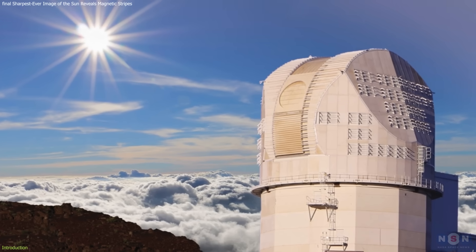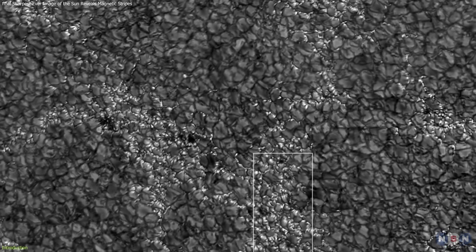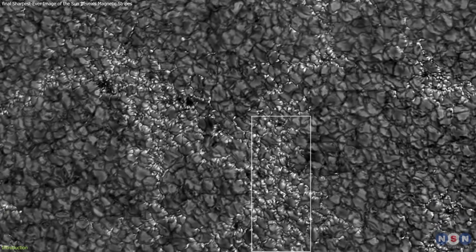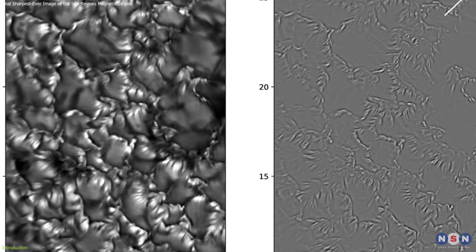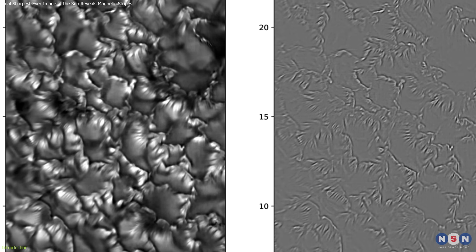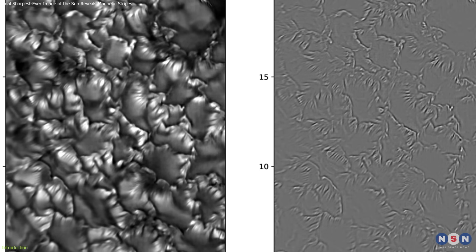In May 2025, astronomers using the Inoue Solar Telescope captured the sharpest image of the Sun ever taken, revealing ultra-thin magnetic stripes just 20 to 50 kilometers wide etched across its surface.